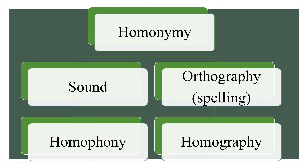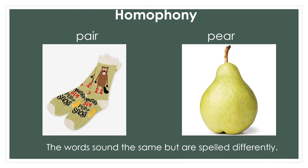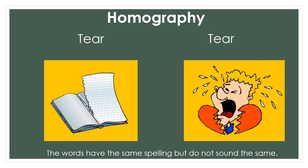Homonyms are unrelated senses of the same phonological word. Some authors distinguish between homographs, which means senses of the same written word, and homophones, which means senses of the same spoken word. Let's look at examples for homophones and homographs.